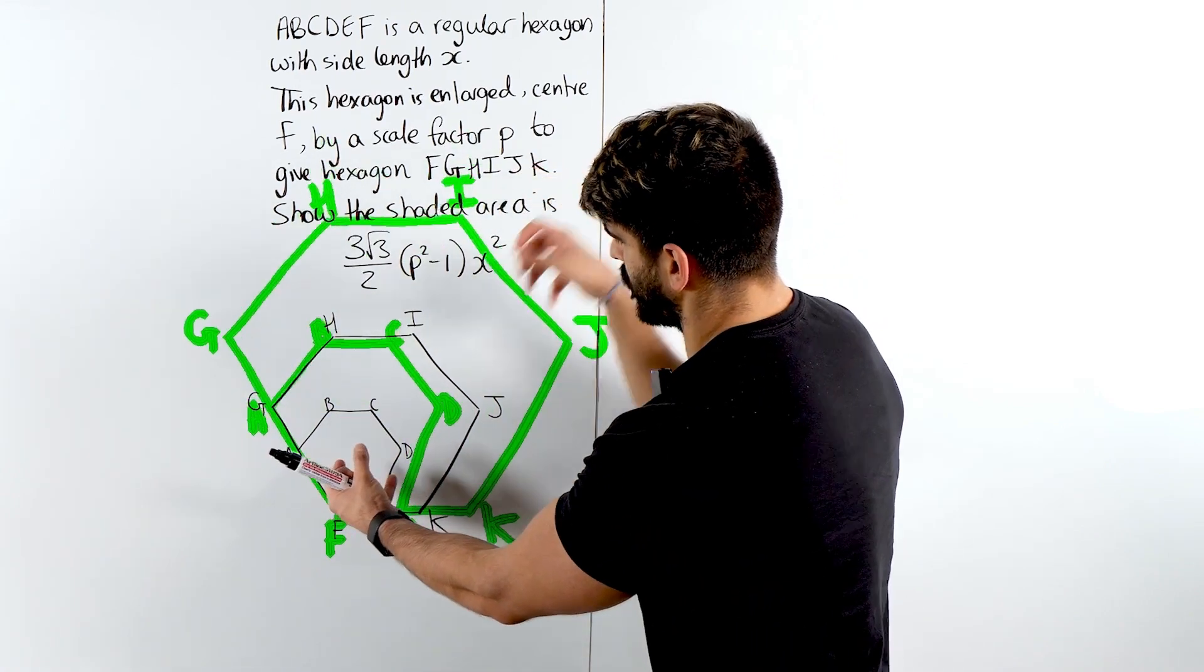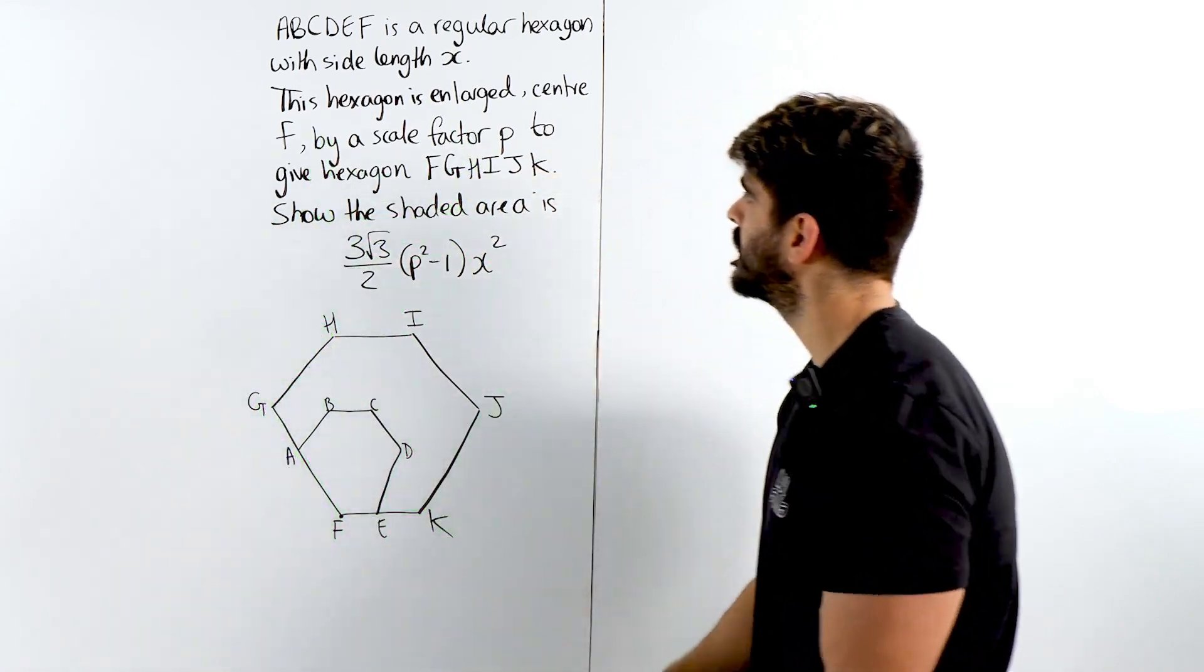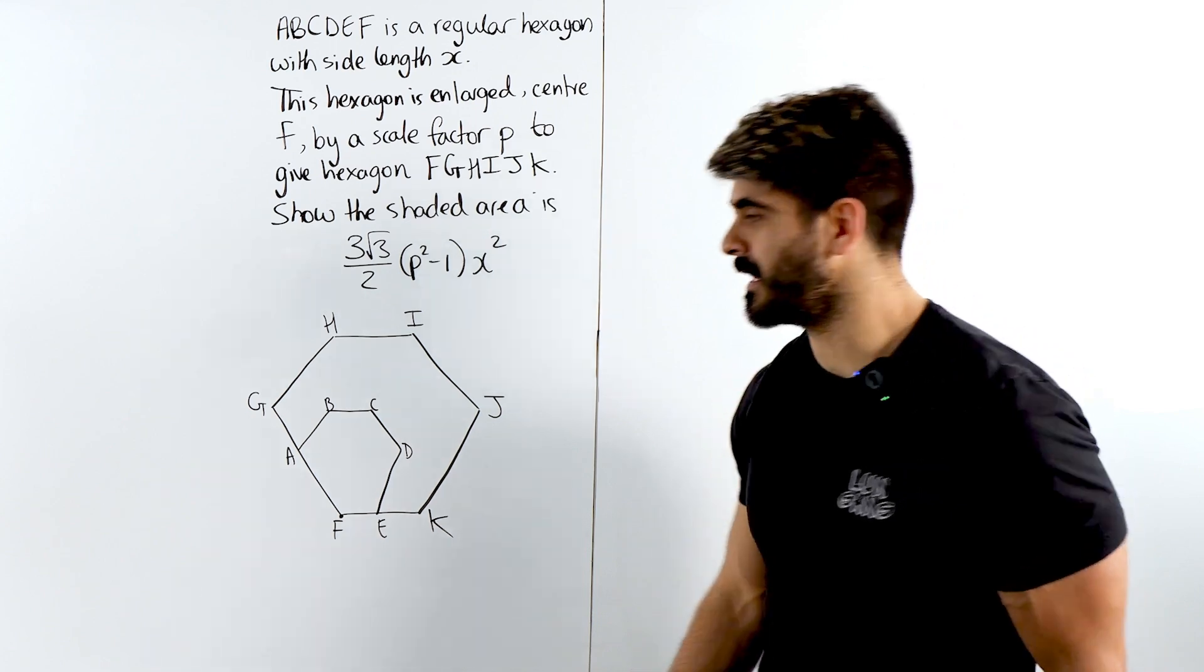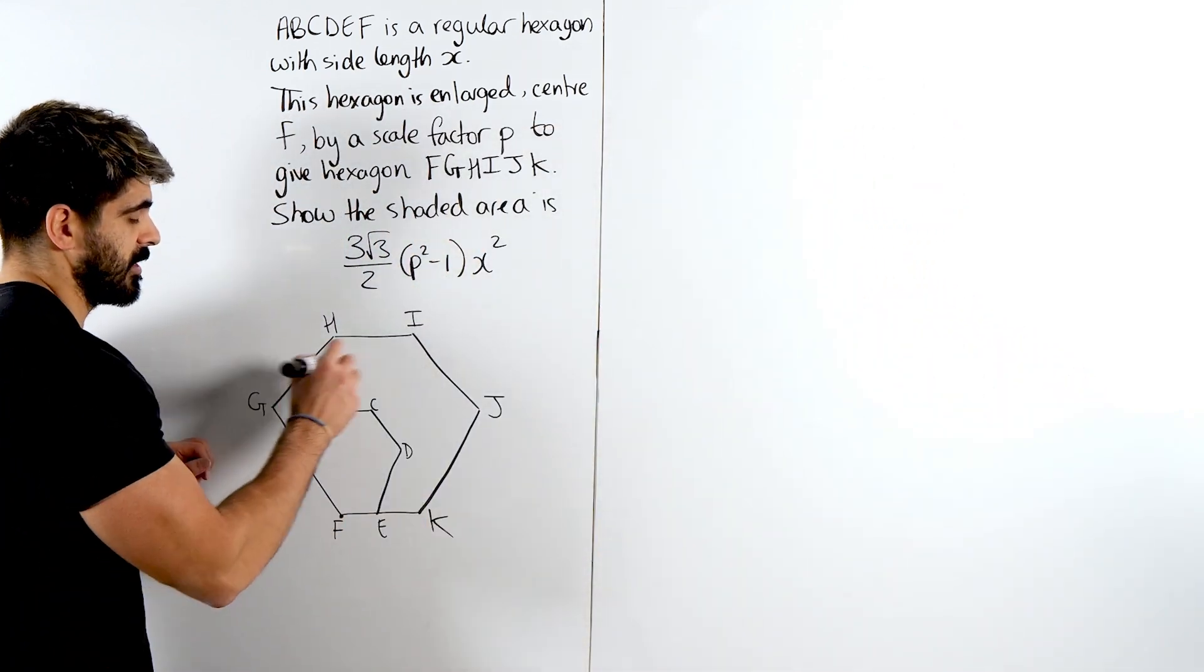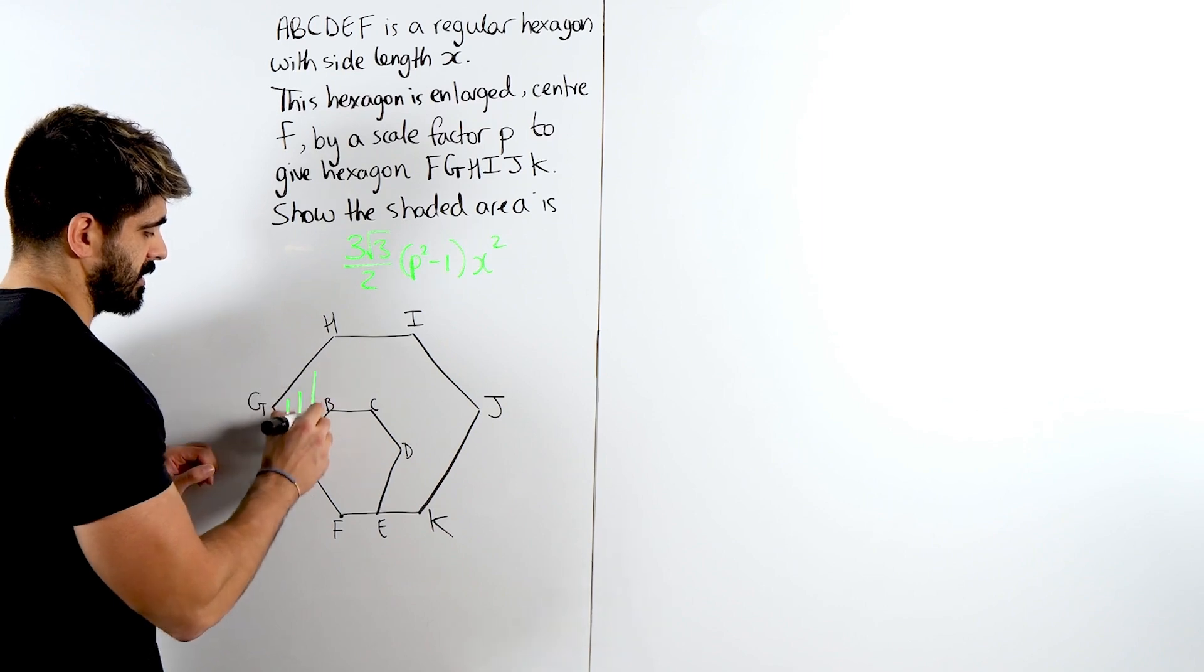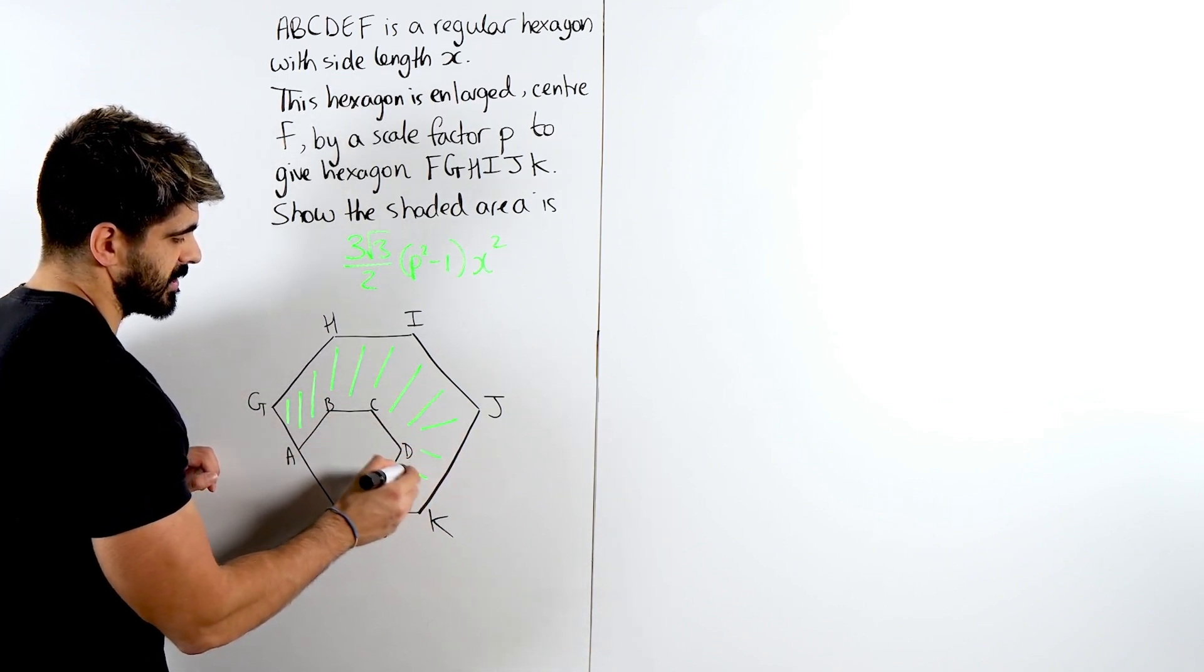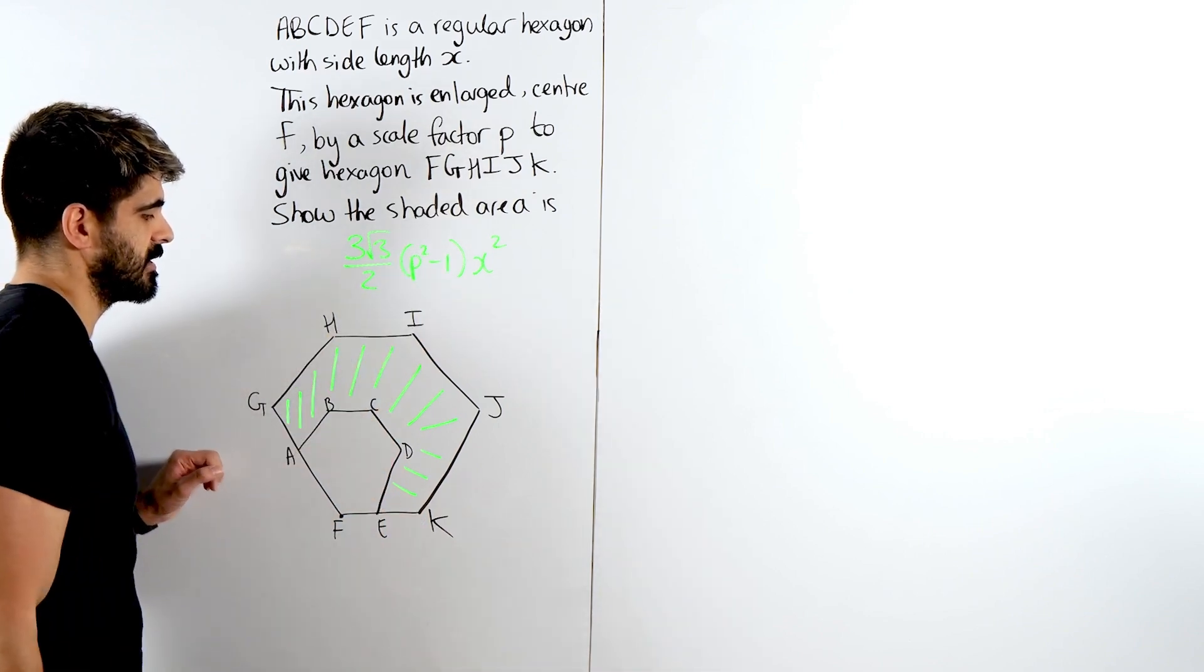So this point here remains unchanged, so it's kind of like blown it up like this to give this larger hexagon. Show that the shaded area is that interesting looking thing. Now I didn't put it at the beginning because I just wanted to show you where it was, otherwise it would look quite messy. They're talking about this area here on the outside, they're saying show that this area is given by this.